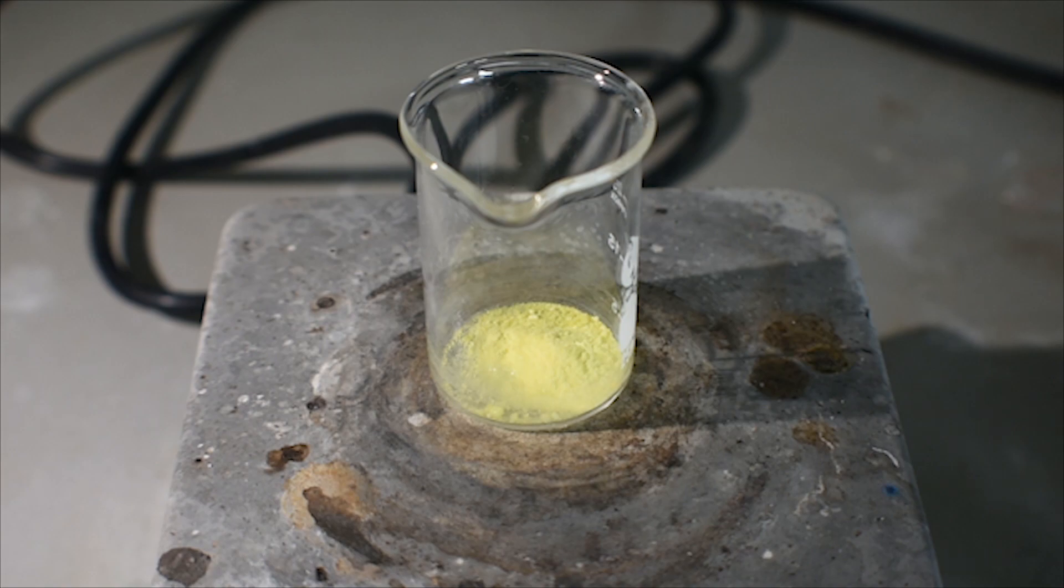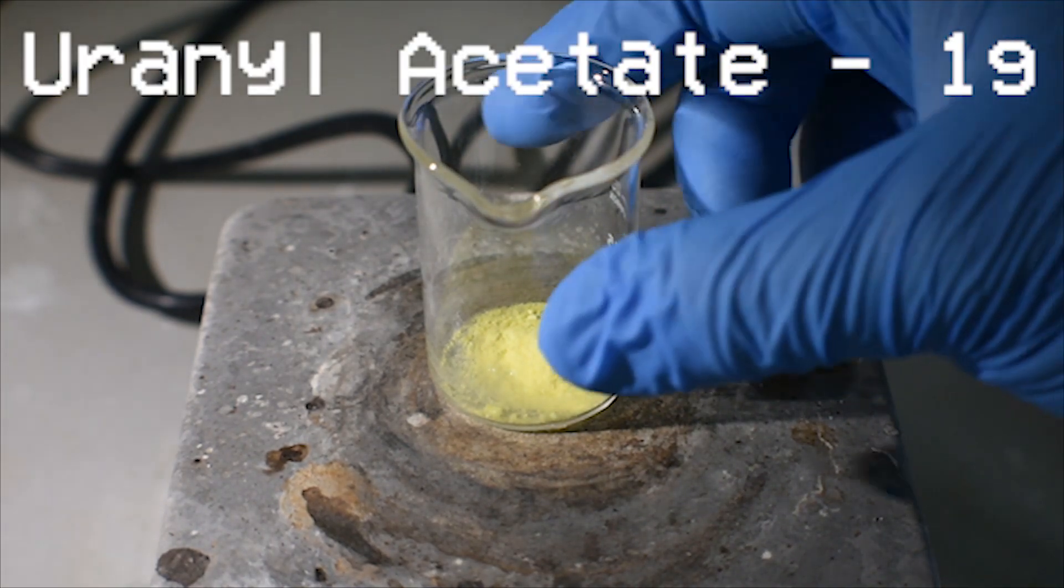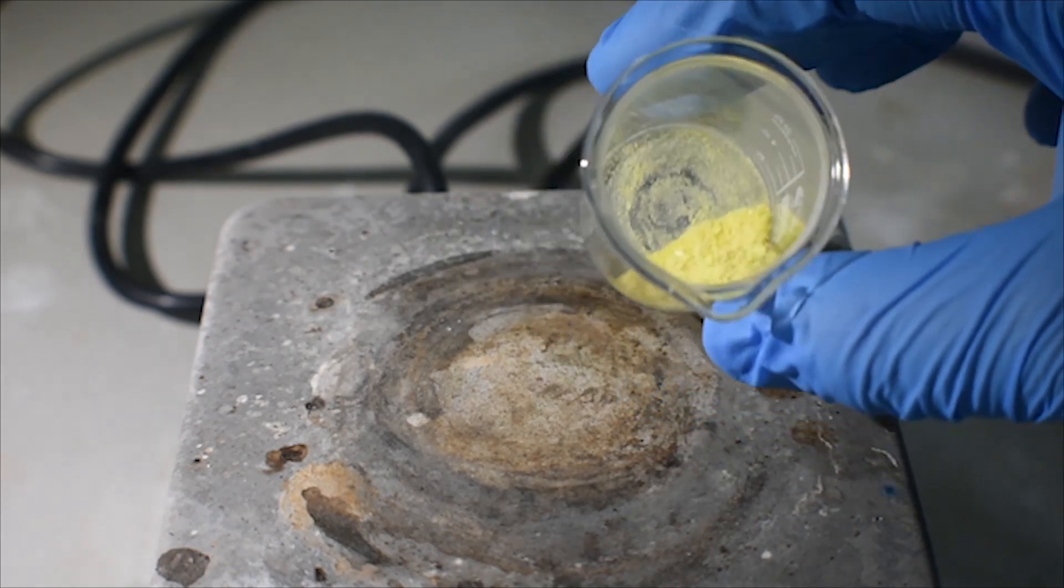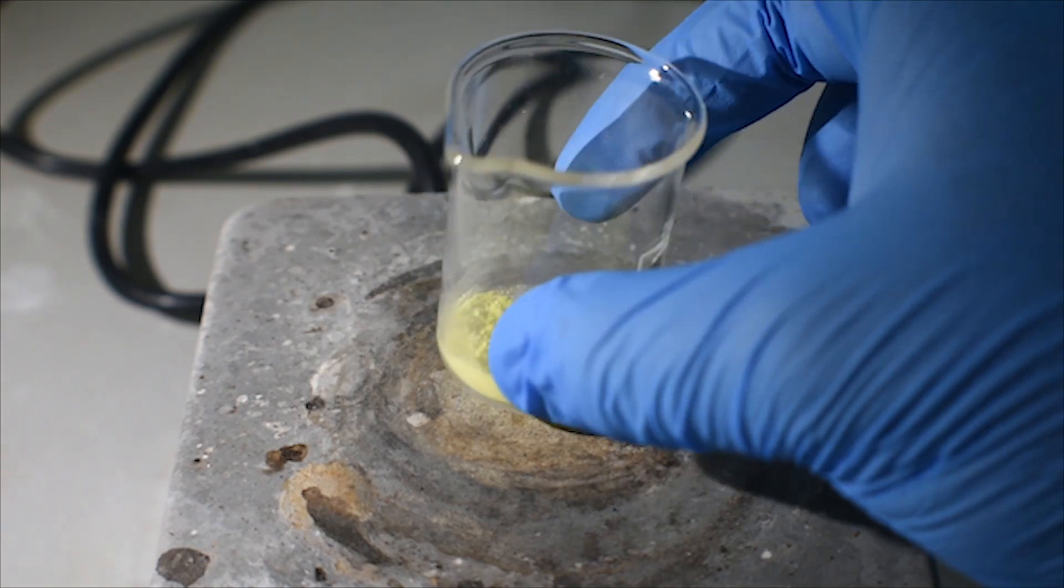To begin, I've weighed out one gram of urinal acetate. It is a bright yellow, green, lime green solid which is fairly soluble in water, but not to any great extent.